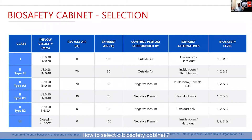In the case of Class 1, the air which is coming in is unfiltered and it is exhausted back into the surrounding within the laboratory. It does not offer any protection to the product, and while it can be used in biosafety levels 1, 2, and 3 based on risk assessment, it is generally obsolete nowadays.